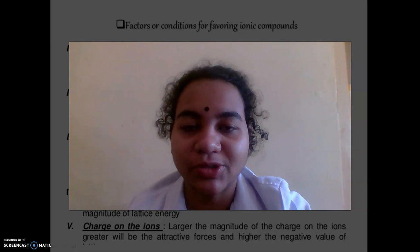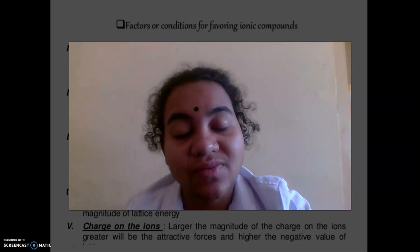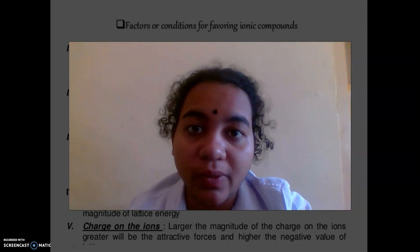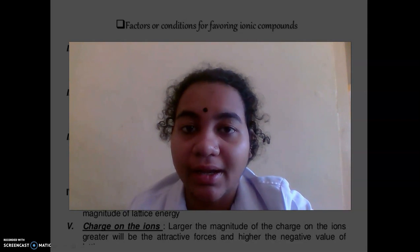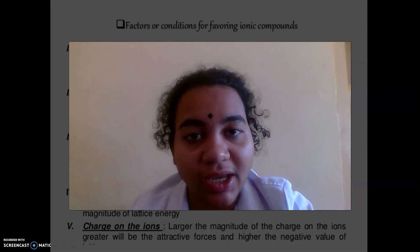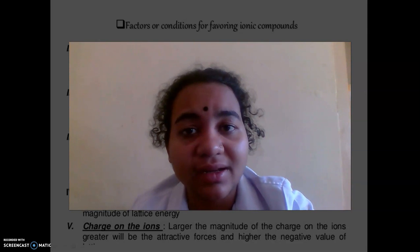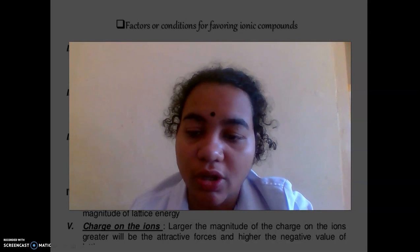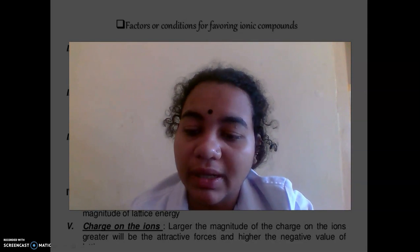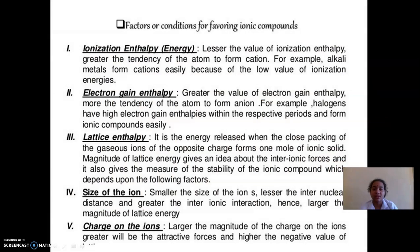Good morning children, welcome to your online chemistry class. Last class we discussed what is an ionic bond according to Kossel's and Lewis theory. If we check the ionic bond, there are several factors which influence the ionic bond. Let's see them one by one in today's class. The first factor is ionization enthalpy.